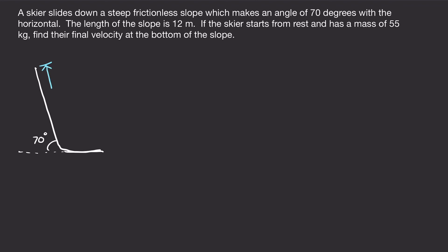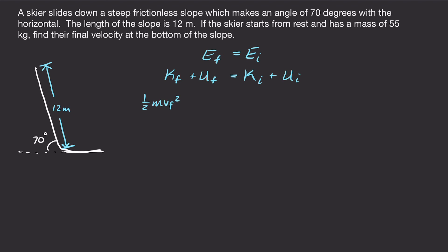It gave us the length of the slope: 12 meters. We use conservation of energy since the skier is changing height and velocity. So final kinetic plus final potential equals initial kinetic plus initial potential. Writing out the terms: one-half mv final squared plus mgh final equals one-half mv initial squared plus mgh initial.